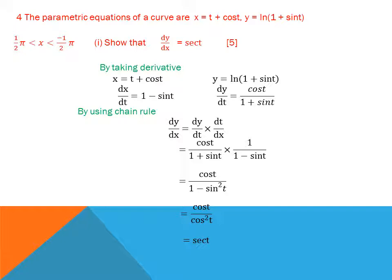Question 4: the parametric equations of a curve are x = t + cos t and y = ln(1 + sin t). The parameter is t, with range −π/2 to π/2. We need to prove dy/dx = sec t. Taking dx/dt: the derivative of t is 1 and the derivative of cos t is −sin t, so dx/dt = 1 − sin t.